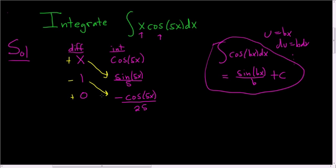It's that easy. So the final answer. Let's see. Following the arrows, we end up with x over 5, sine of 5x.